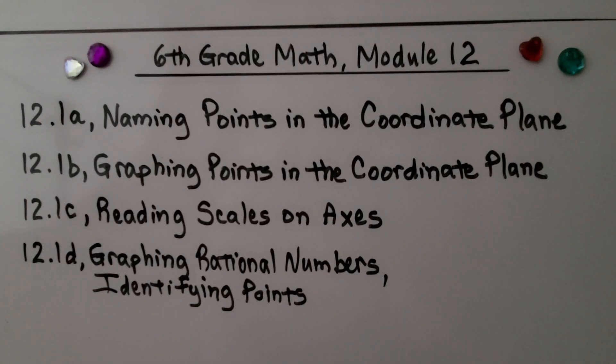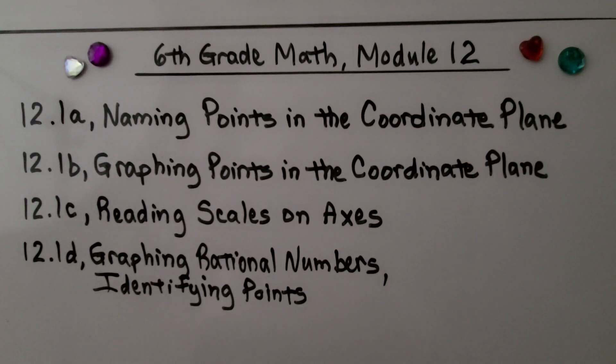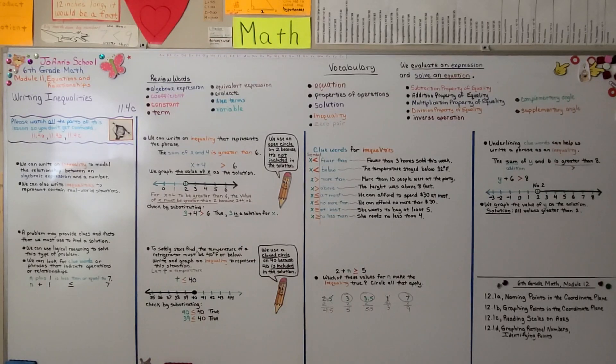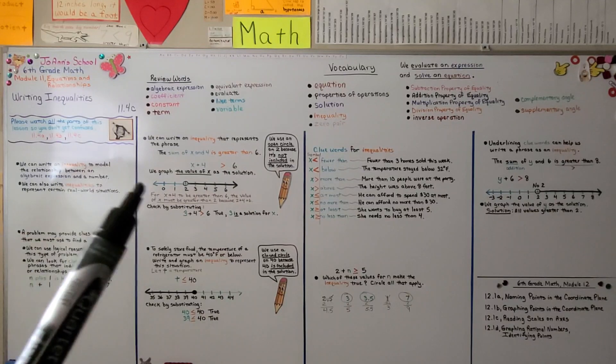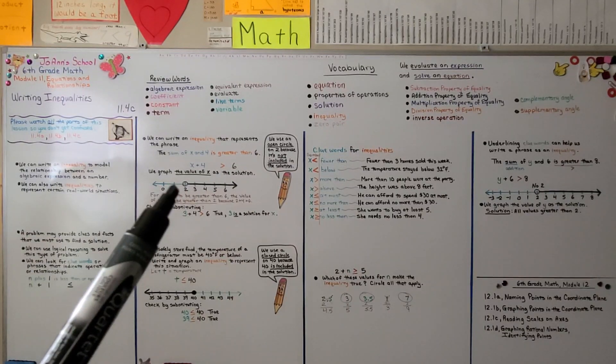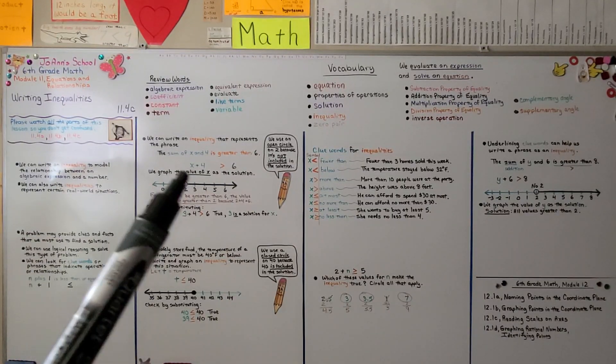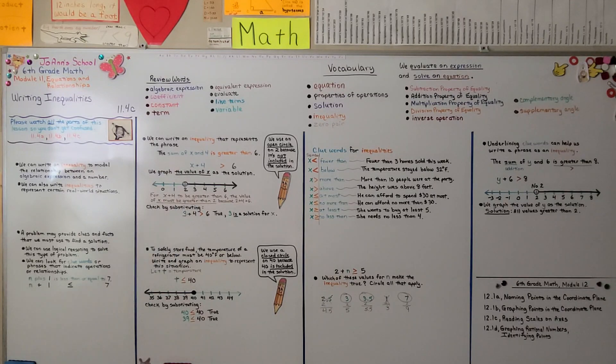We're now finished with module eleven and we're moving on to module twelve. And our next lesson is going to be naming points in the coordinate plane. Remember, if the number is not included as part of the solution, we use an open circle like an O for no. Have a really good day and I hope you'll join me for module twelve. Bye.